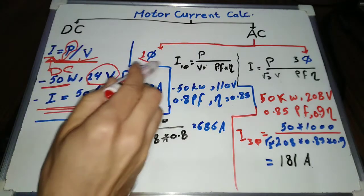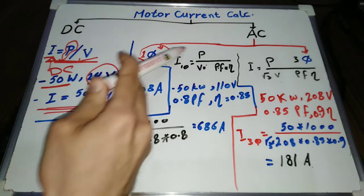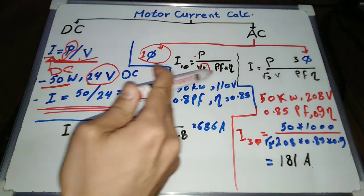AC single phase motor current formula is: current equals power divided by voltage times power factor times motor efficiency.